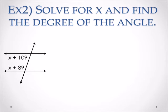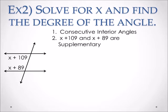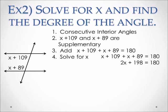Let's try another example — again, solve for X and find the degree of the angle. We have angles on the same side of the transversal and in between parallel lines, so these are consecutive interior angles. Consecutive interior angles add up to 180 degrees. We set X plus 109 plus X plus 89 equal to 180. Combining like terms gives 2X plus 198 equals 180. Subtracting 198 from both sides gives 2X equals negative 18, then divide by 2 to get X equals negative 9.